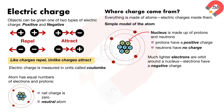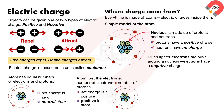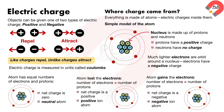This is called the neutral atom. When an atom loses electrons, the number of electrons is less than the number of protons, and the net charge is positive. This is called a positive ion. When an atom gains electrons, the number of electrons is more than the number of protons, and the net charge is negative. This is called a negative ion.